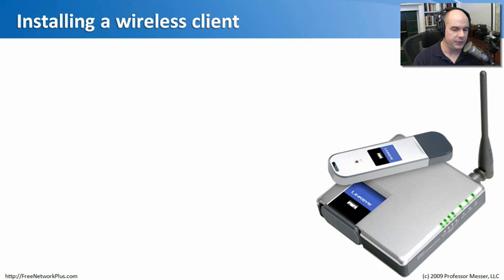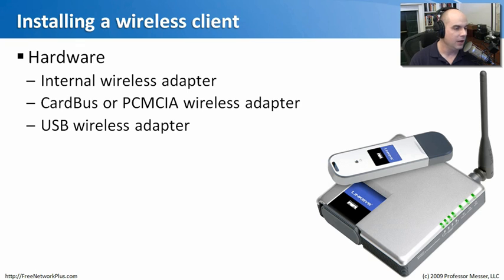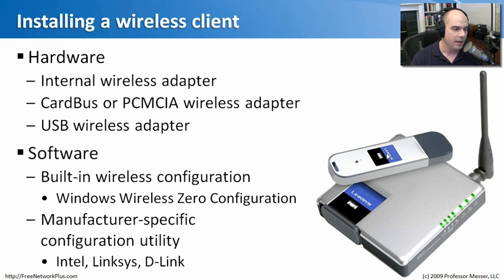If we have workstations that need to connect to our wireless network, we first need to install a wireless client. We're going to get a piece of hardware that connects via USB, or has an embedded wireless card. It may come in a laptop, be a card installed on a desktop, a card bus adapter, a PCMCIA adapter, or one of those USB key type adapters. We also need to load software for this.